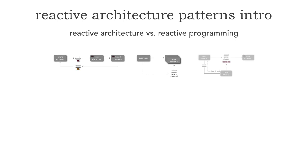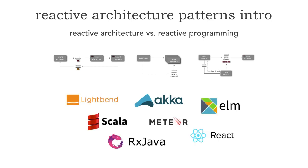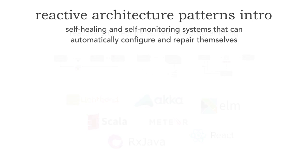When we take a look at reactive architecture, these are the patterns I'm going to be showing you in future lessons. When we talk about reactive programming, these are ways of implementing these kinds of patterns, both as an implementation and as a style of programming. In future lessons, I'm going to be showing you where these tools, frameworks, and languages can help in implementing certain types of reactive architecture. What reactive architecture really allows us to do is create self-healing and self-monitoring systems that are self-aware, can automatically configure and repair themselves, and also grow as our company grows.